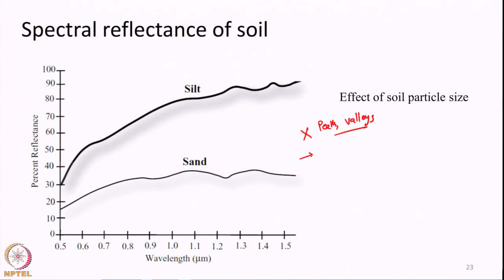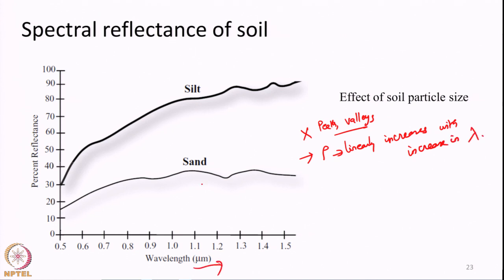Also, one more thing we may notice: the reflectance in general linearly increases with increase in wavelength. That is, as the wavelength increases, the reflectance in general increases. There may be some ups and downs, but not as sharp as vegetation, and very high dips may not be there. It is a gradually increasing curve. This is how the reflectance curve of soil will look.